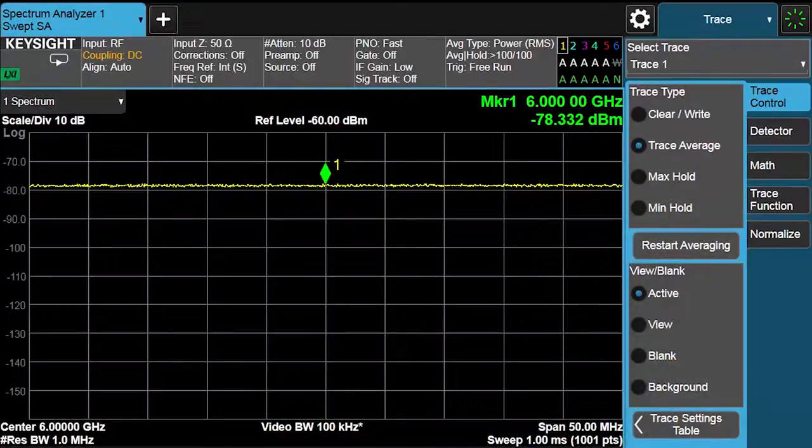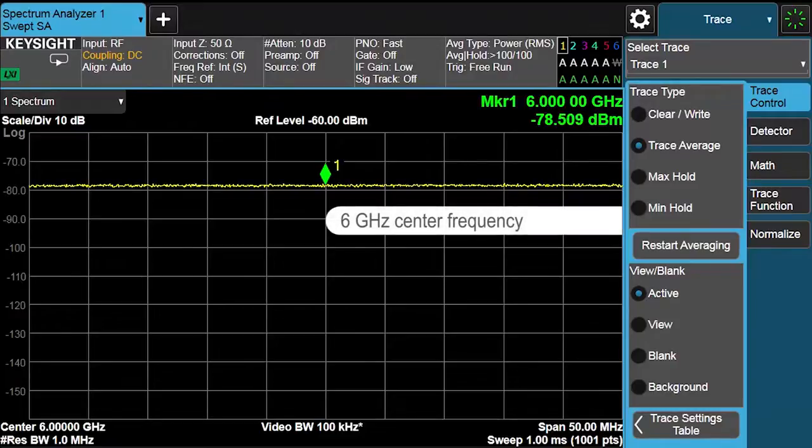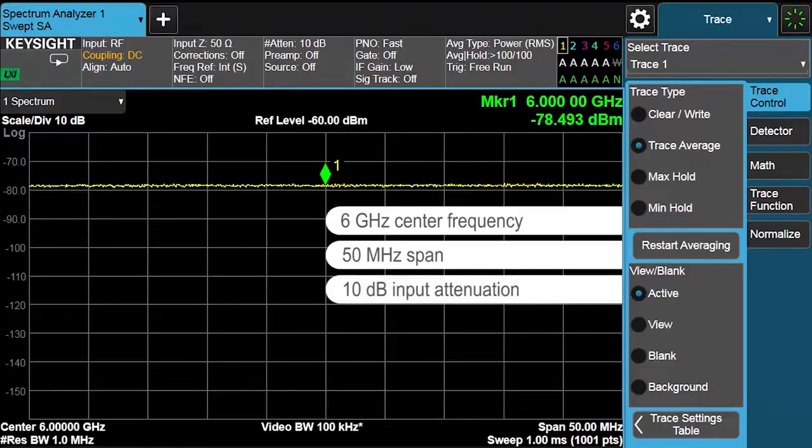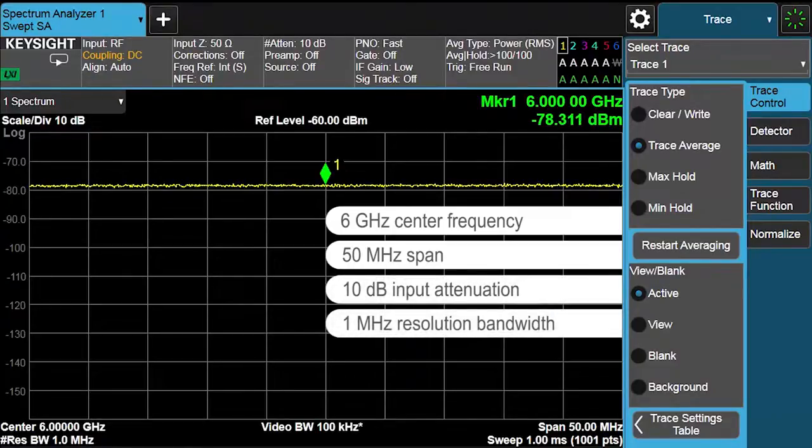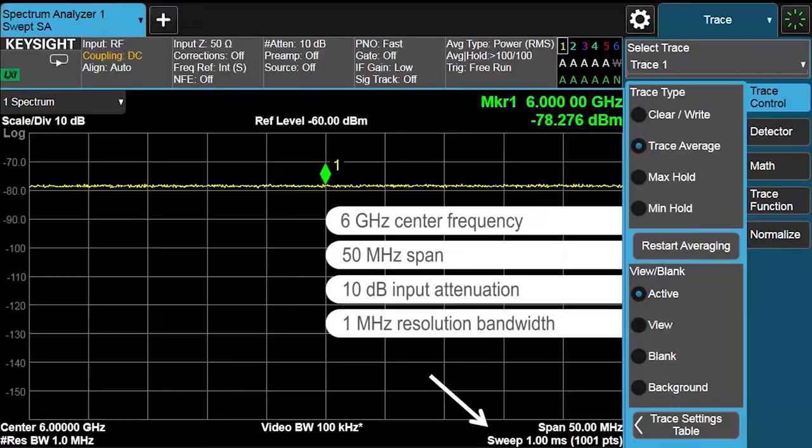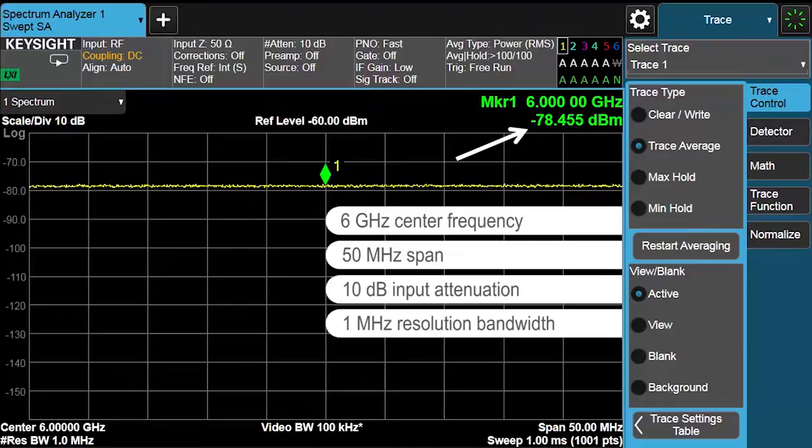So now we're in basic SA mode. I have a six gigahertz center frequency and a span of 50 megs. The input attenuation is set to 10 dB. The resolution bandwidth is one megahertz. The pre-amplifier and noise floor extension are off. Please notice the sweep speed of one millisecond on the bottom right. Marker one is at the center of the trace, and we have a reading of minus 78 dBm.